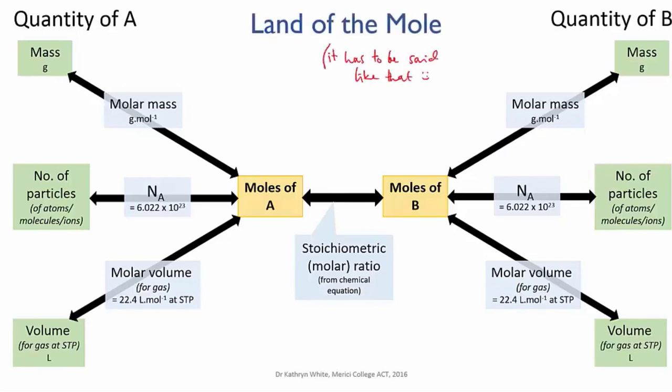So what this diagram does is map out the calculation path that you would take for any given stoichiometric problem. For instance, if you had a certain mass of reactant, and you wanted to know what mass of product it would give, you would convert the mass of the reactant to moles, you'd use the mole ratio to calculate the moles of product that would be produced, and then you'd convert the moles of product into a mass.